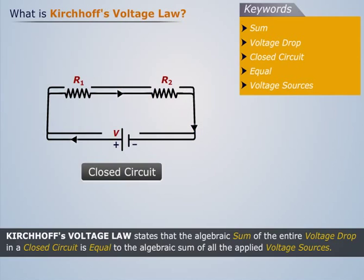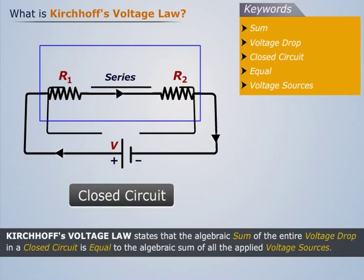As the resistances R1 and R2 are in series, the same amount of current will flow through them.